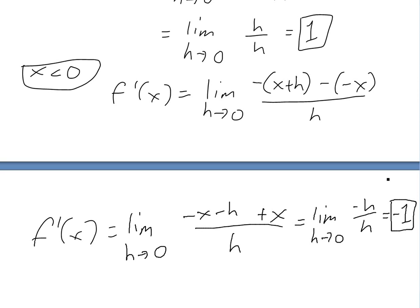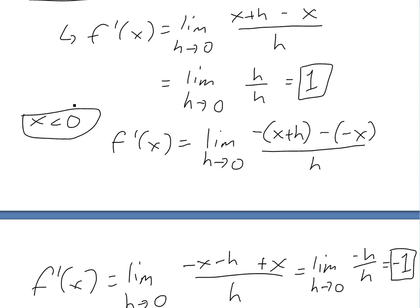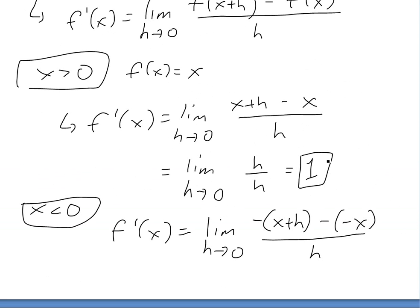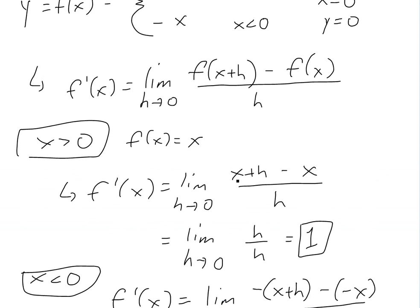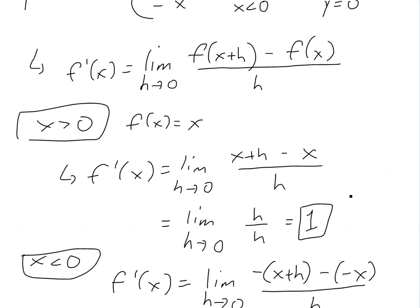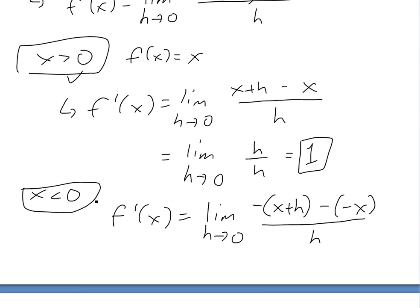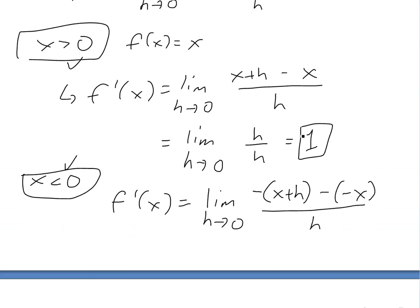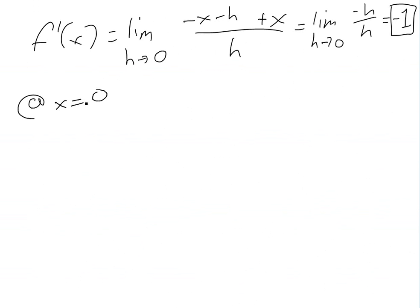So as you can see, whenever x is less than zero, the derivative exists, so it is differentiable. The limit exists and equals one whenever x is greater than zero, and equals negative one whenever x is less than zero — so it is differentiable for x greater than zero or x less than zero. But now let's look at when x equals zero.